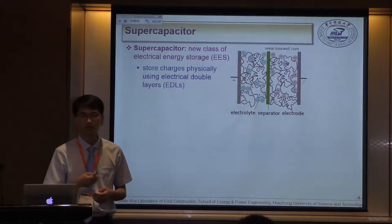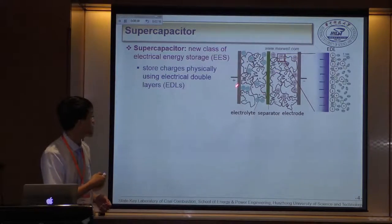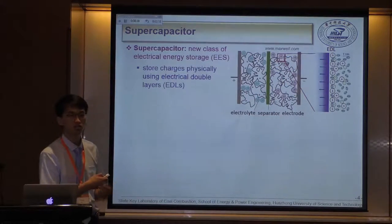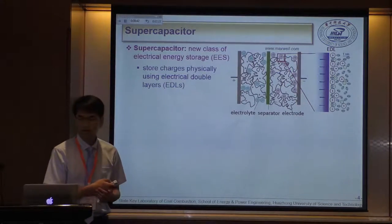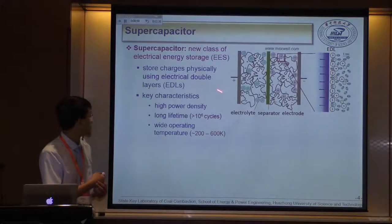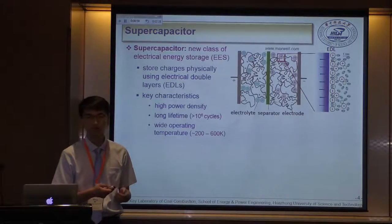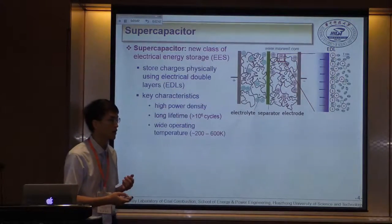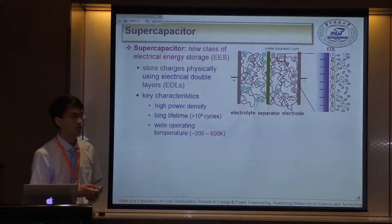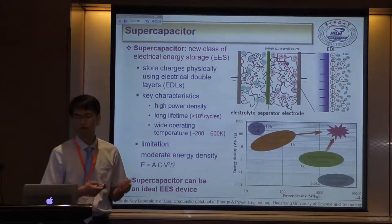Supercapacitors, as mentioned by previous speakers, have high performance. When a potential is applied between the two electrodes, anions and cations migrate into the positively and negatively charged electrodes respectively, forming electrical double layers at the electrode-electrolyte interface. This mechanism gives supercapacitors several key features such as long lifetime, wide operating temperature, and significantly higher power density than most batteries. However, they have a limitation: limited or moderate energy density compared with batteries.